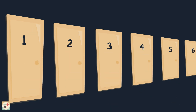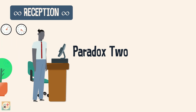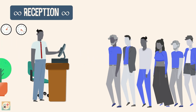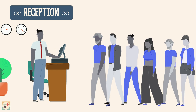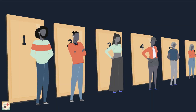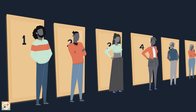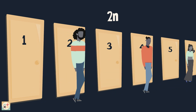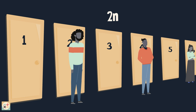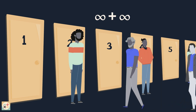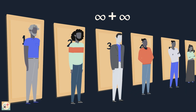But what if, instead of just 1 guest, an infinite number of new guests show up? It sounds impossible, but there's a way. We ask the current guests to move again, but this time each guest in room N moves to room 2N, doubling their room number. So the guest in room 1 moves to room 2, the guest in room 2 moves to room 4, and so on. Now all the odd-numbered rooms are free, and we can accommodate every new guest, as there are an infinite amount of odd-numbered rooms. Here, we have added infinity to infinity.